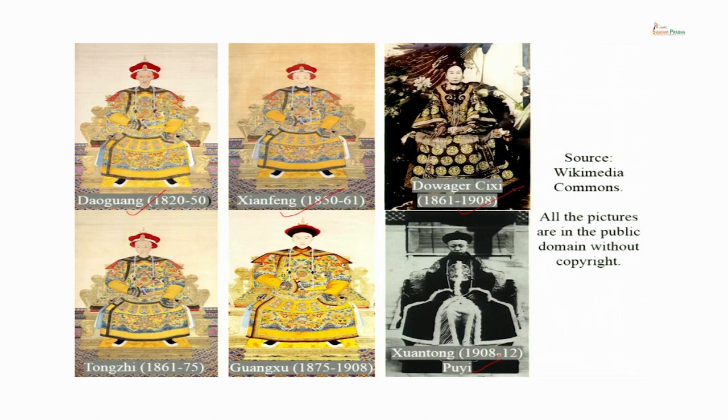Puyi ruled for 4 more years and then in the Xinhai revolution he was overthrown and the Republic of China was established. Throughout the period of all these rulers, China was declining. It was defeated one by one by foreign powers who took more and more concessions, and China practically became a semi-colonial state. Semi-colonial basically means it was not fully colonized like India. India was mostly ruled by the British, while China mostly was under its own indigenous rule, but in its coastal areas the foreign powers had their influence.